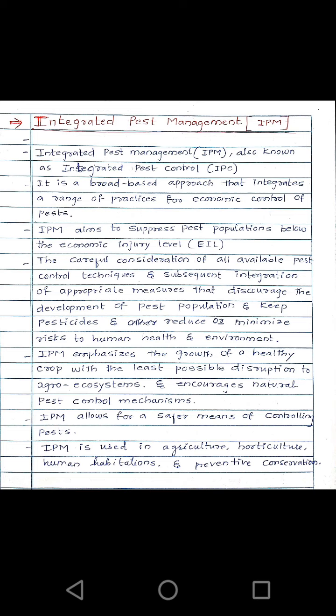IPM allows for safer means of controlling pests. IPM is used in agriculture, horticulture, human habitations, and preventive conservation. In these fields IPM is often used, and IPM will suggest some of the main principles to reduce the population of pests.